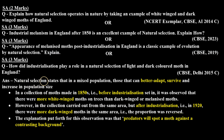Natural selection states that the organism which adapts better will survive in nature, and its population size will increase. Now, before industrialization in England, there was no pollution, so white-colored lichen grew on the trees.